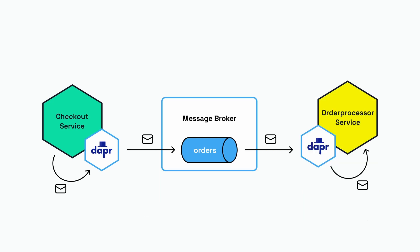Let's say we have an e-commerce context. There is a checkout service, and the result of that checkout service is an order. We are using the Dapr API to send this order to the message broker, which has an orders topic. On the other side, we have an order processor service that will do some processing on that order and is receiving the message.